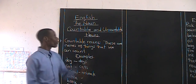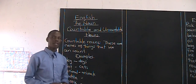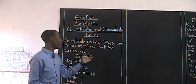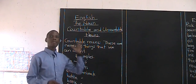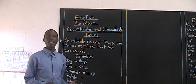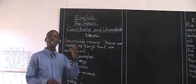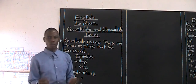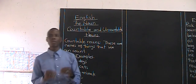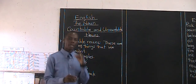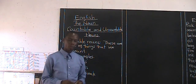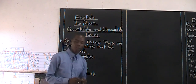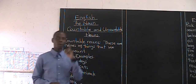If you don't want to say they are names of things that we can count, we can say these are names of things that can be written or said in plural. When we talk about plural, we are talking about more than one.